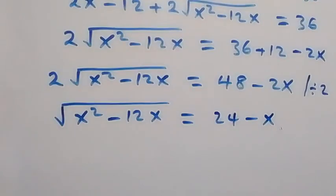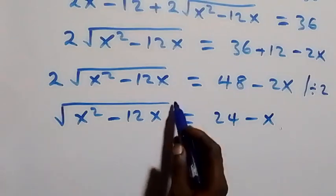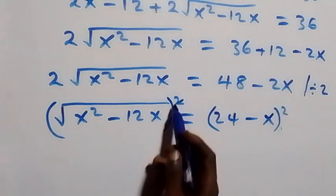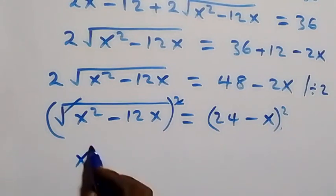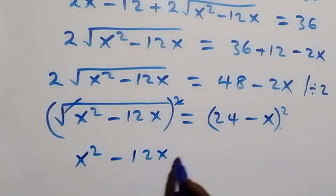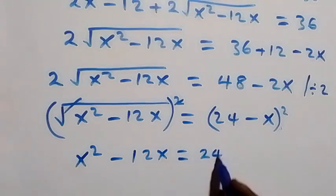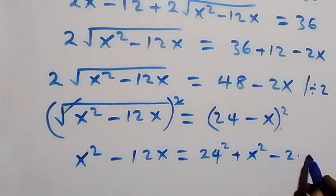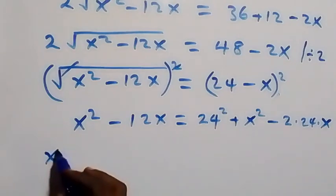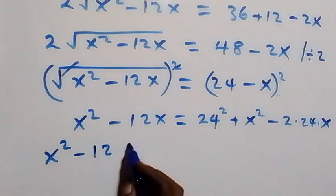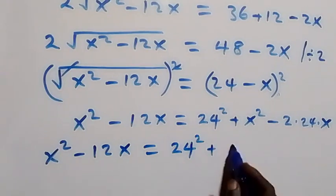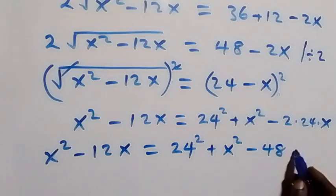The next step: we square both sides again. The square cancels the square root, giving us x squared minus 12x. Expanding the right side using (24 minus x) squared: 24 squared plus x squared minus 2 times 24 times x, which is 576 plus x squared minus 48x.